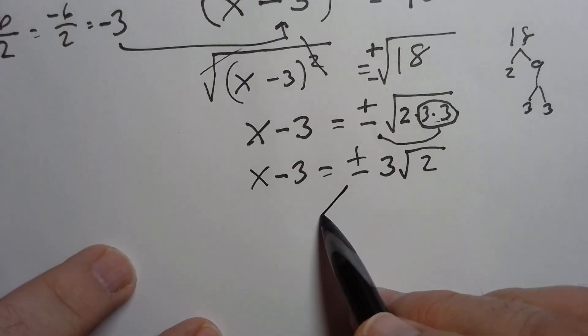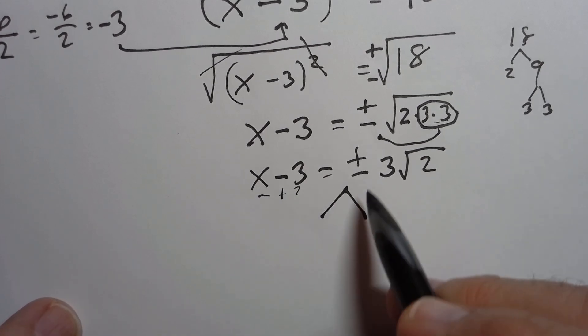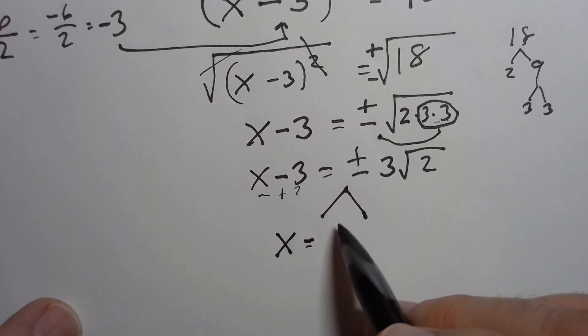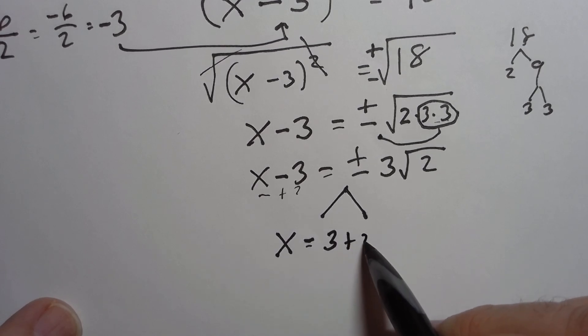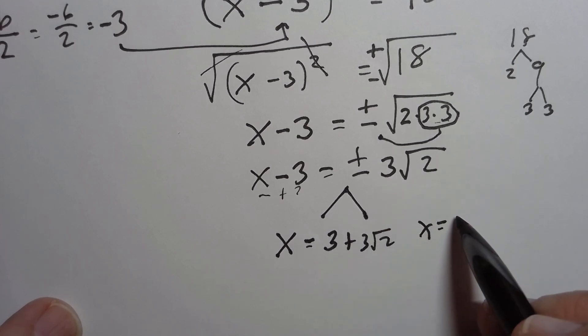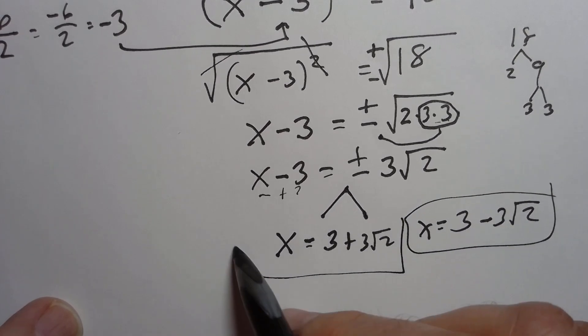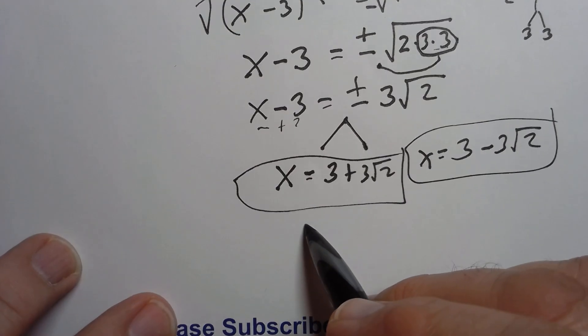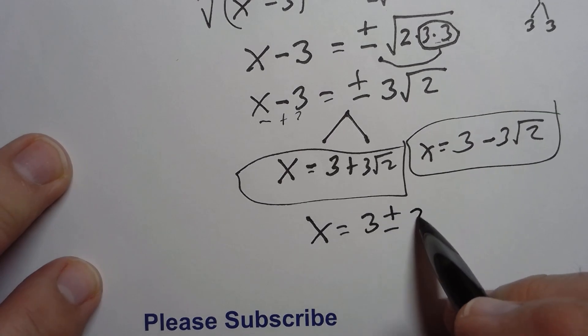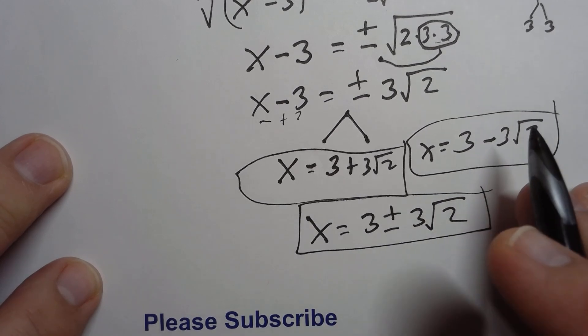And now we can split this into two solutions. On this side, we've got, I'm going to add 3 to both sides. So I've got on the left-hand side, x is equal to, and if I add 3 to both sides, I've got 3 plus 3 square root 2. And the second solution is x is equal to 3 minus 3 square root 2. Those are the two solutions that we have. Another way of writing that, you could write it together, is just saying x is equal to 3 plus or minus 3 square root 2. That's the solution to this by completing the square.